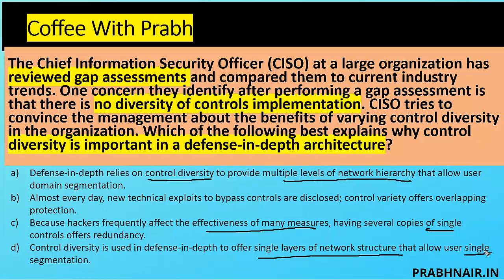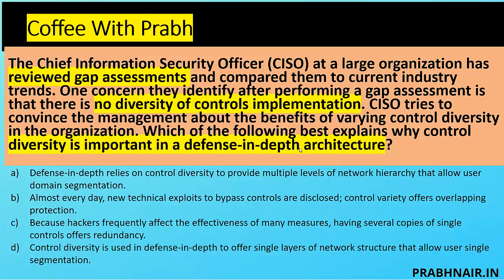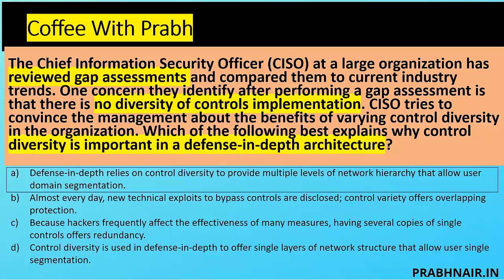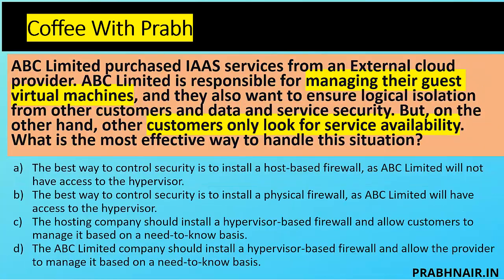In CISSP, CCSP, and CompTIA exams, one word can change the answer. Option D looks correct at first glance but introduces 'single layer of network architecture,' which eliminates it. Option A is the closest with two key phrases: multiple levels of network hierarchy and domain segmentation. Remember: scenario-based questions give you more information, so read thoroughly. The answer is A.